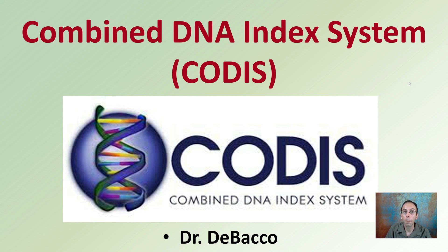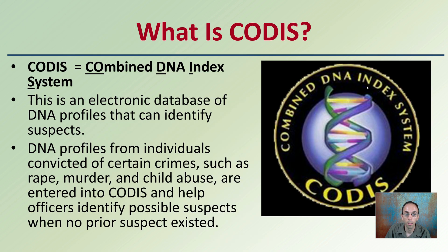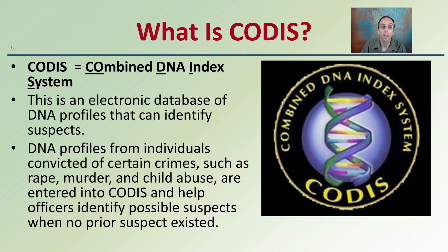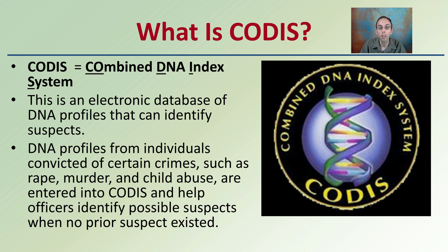I'm going to provide some information on the Combined DNA Index System, or CODIS. What is CODIS? CODIS is an electronic database for DNA profiles that can identify suspects. The DNA profiles from individuals convicted of certain crimes, such as rape, murder, and child abuse, are entered into CODIS and help officers identify possible suspects when no prior suspect exists.